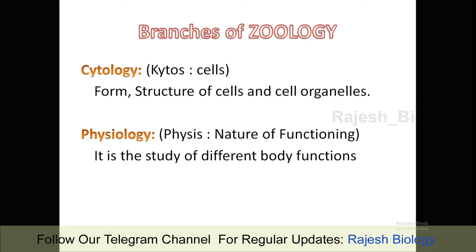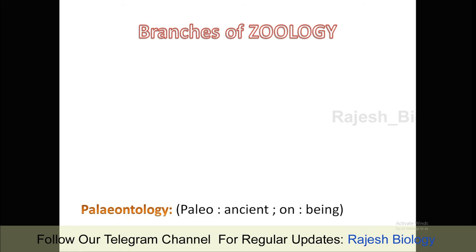Next are cytology and physiology. Cytology: 'cytos' means cells, so cytology deals with the form, structure of cells and cell organelles — including prokaryotic and eukaryotic cells. It deals with features of the cell as the structural unit of an organism. Physiology: 'physis' means nature of function. Physiology is the study of different body functions like digestion, respiration, circulation, excretion — all physiological functions which occur in living things.